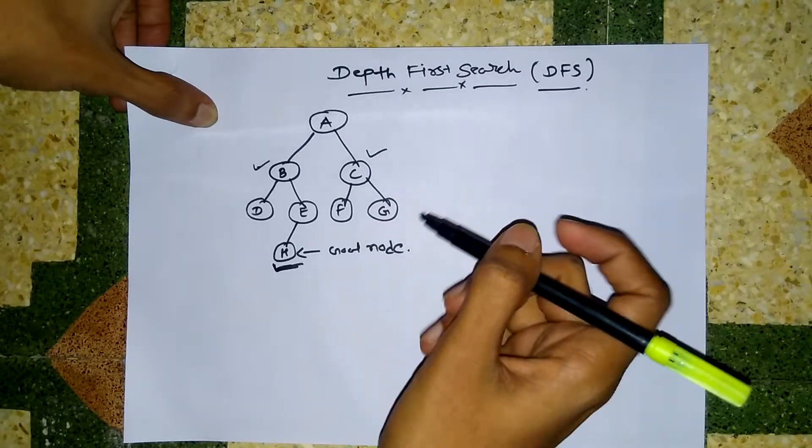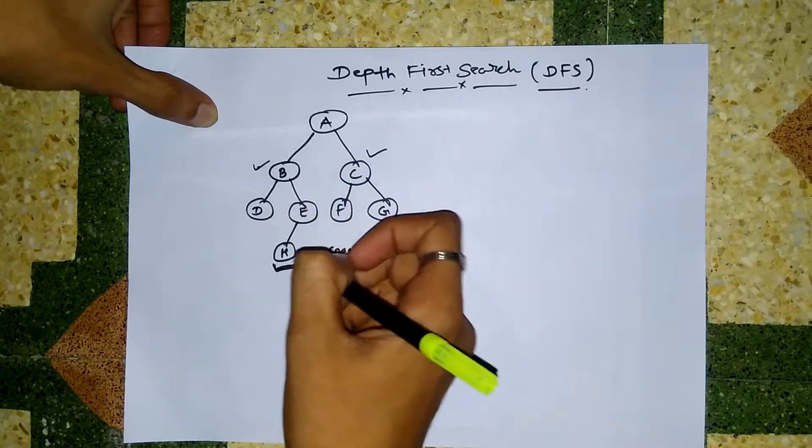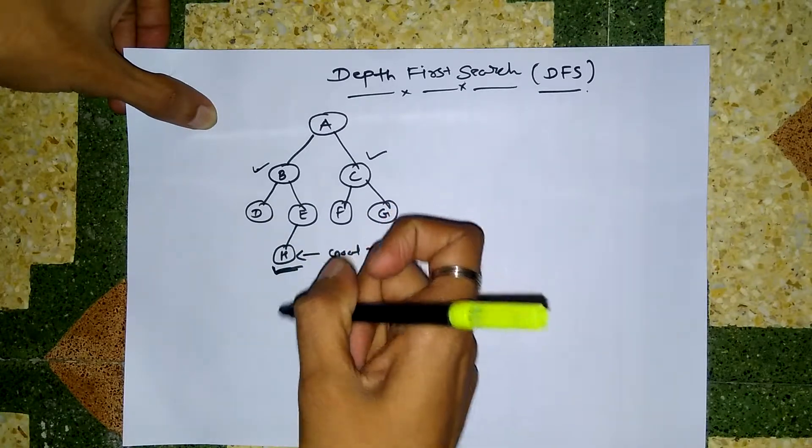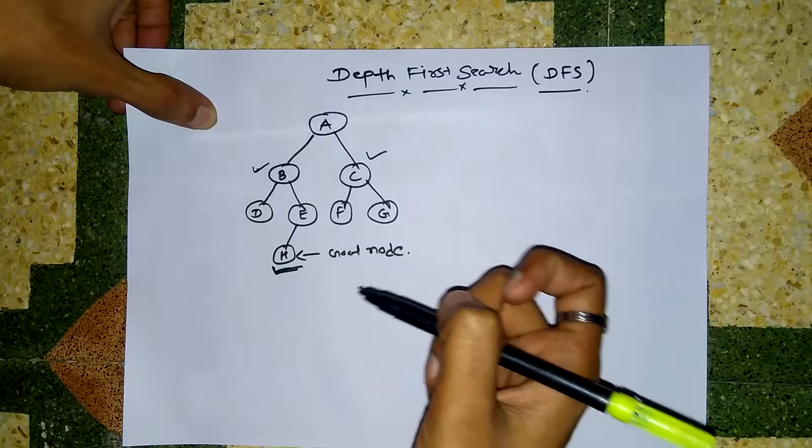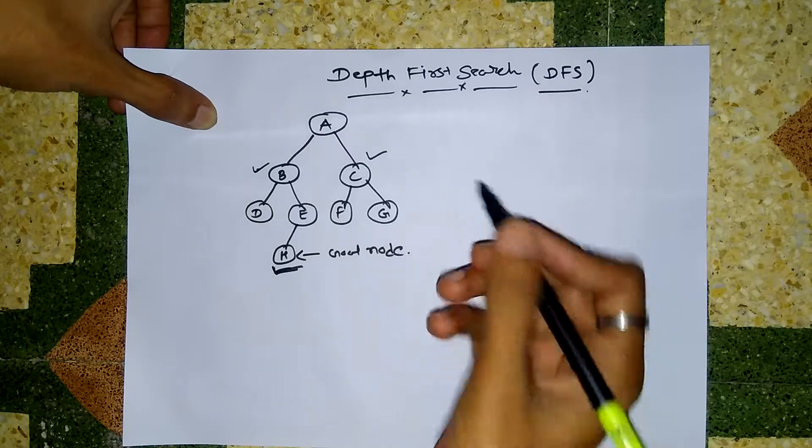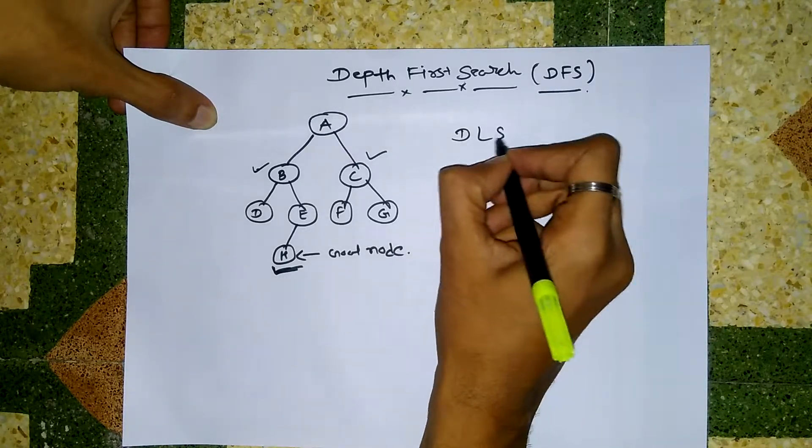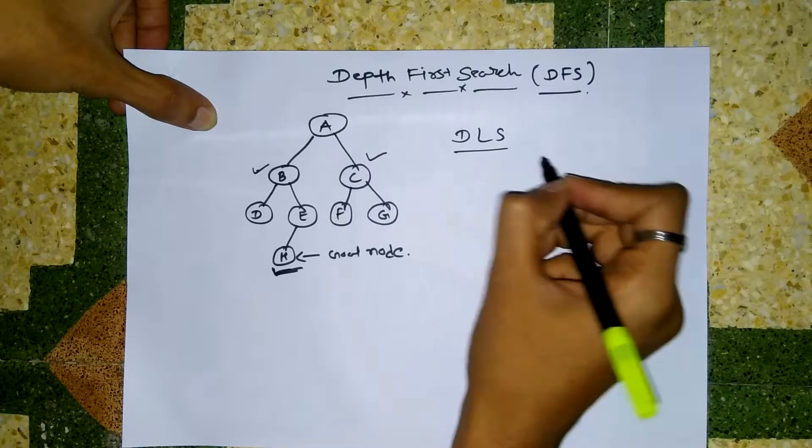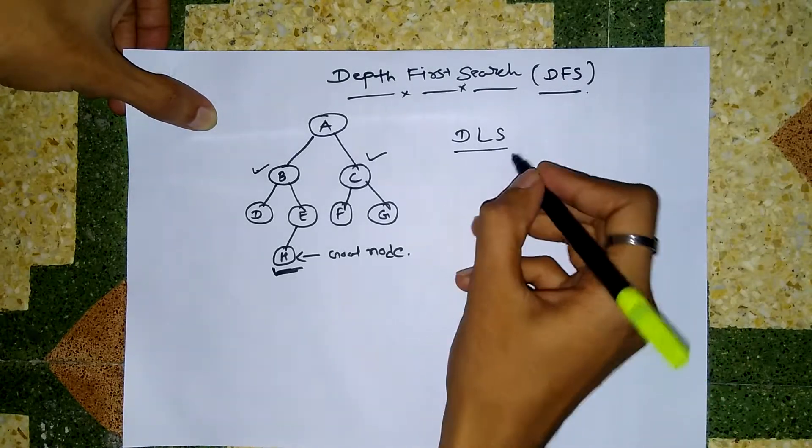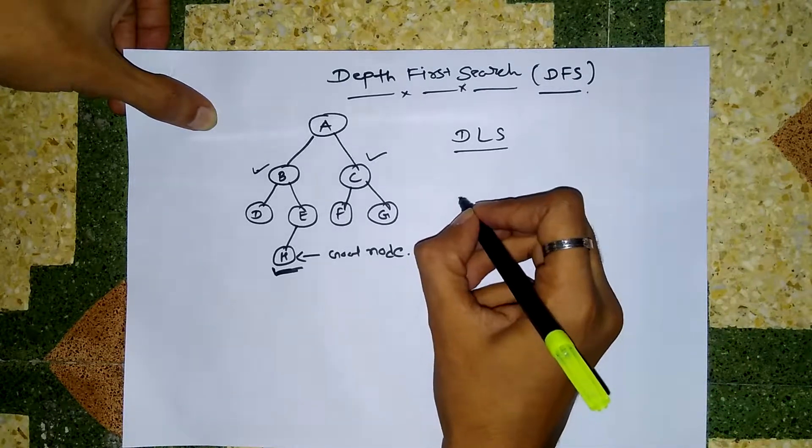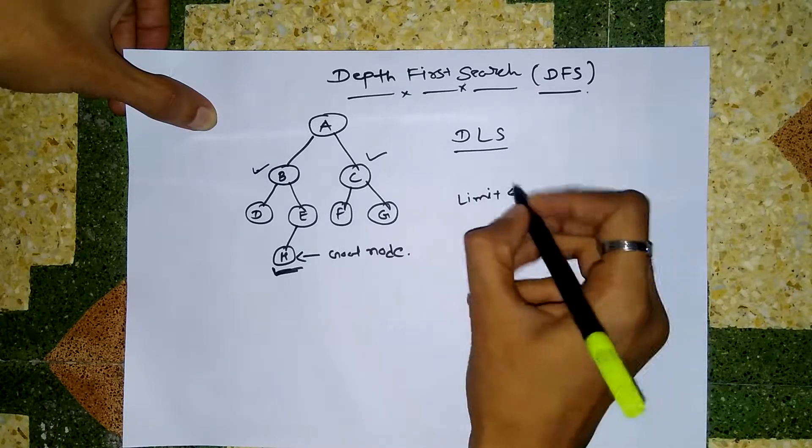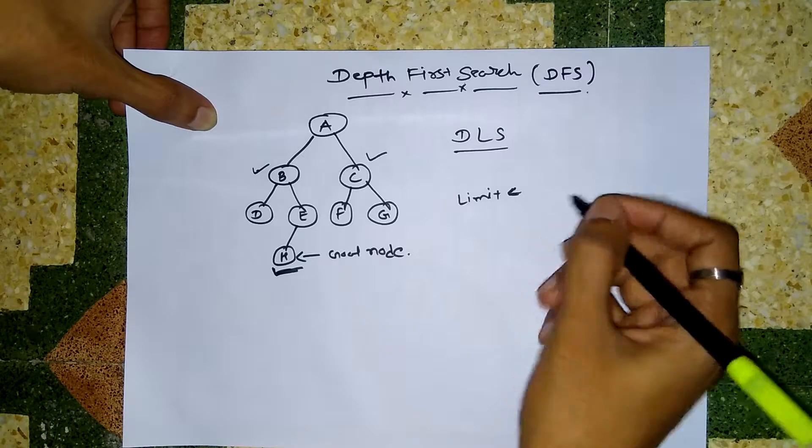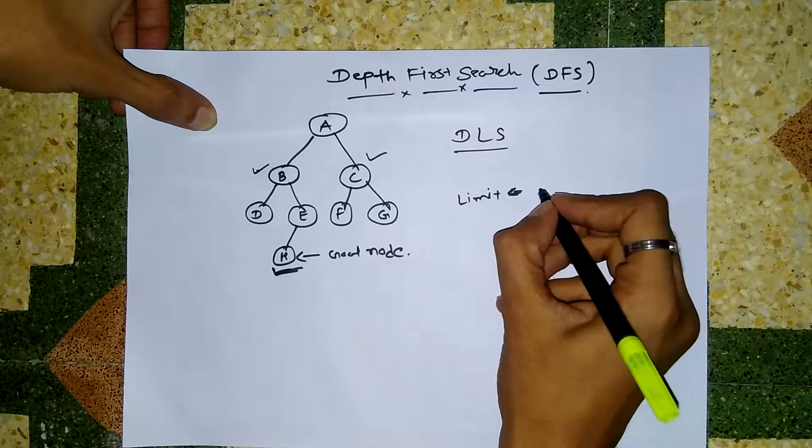So what is the solution for that? It is DLS, that is Depth Limited Search. In Depth Limited Search we have to give a limit, so DFS is searching until that level only. If the limit is 4, then it will search four levels only.